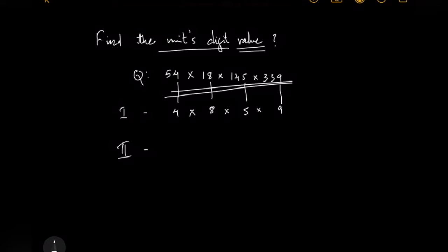Coming to step number 2, what you have to do is multiply these two: 4 × 8 equals 32.